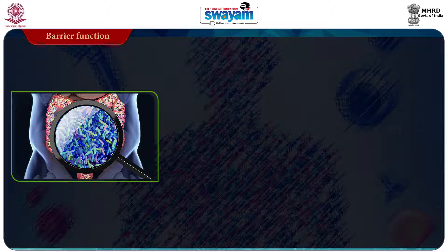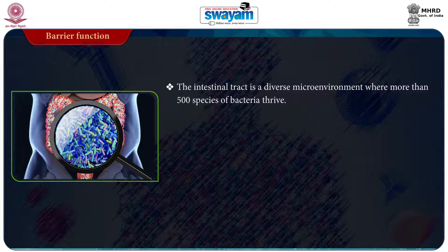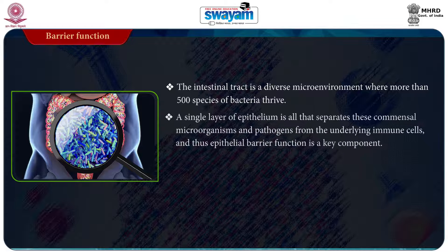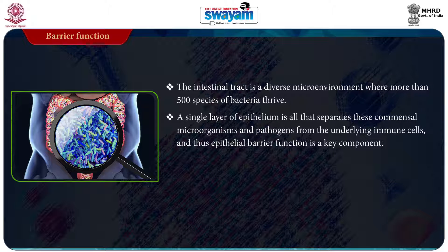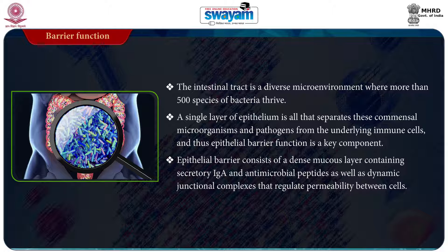Let's have a look at the first mechanism of action, that is barrier function. The intestinal tract is a diverse microenvironment where more than 500 species of bacteria thrive. A single layer of epithelium is all that separates these commensal microorganisms and pathogens from the underlying immune cells, and thus epithelial barrier functions as a key component. The epithelial barrier consists of a dense mucous layer containing secretory IgA and antimicrobial peptides, as well as dynamic junctional complexes that regulate permeability between cells.